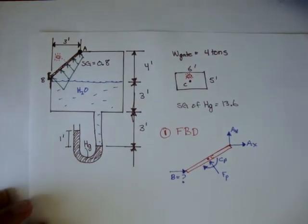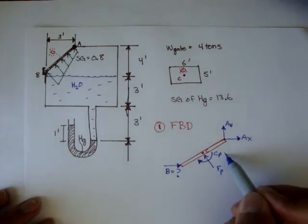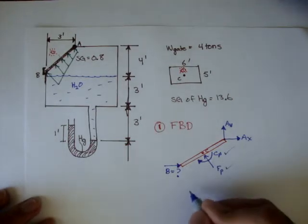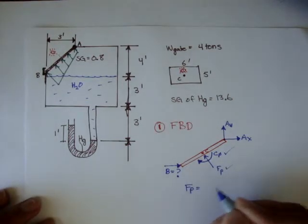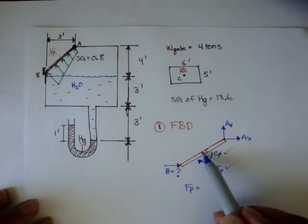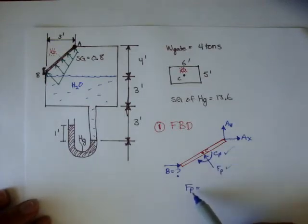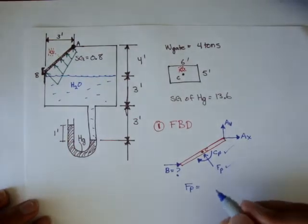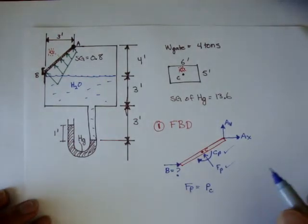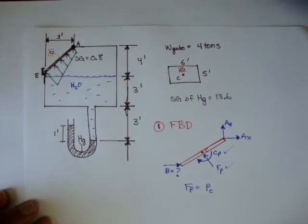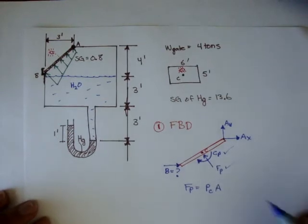And, remember, our two equations we can use to find the couple and the force is that Fp, or the force, acting at the centroid of the object resulting from the pressure distribution, is the pressure at the centroid of that gate, times the area of that gate.